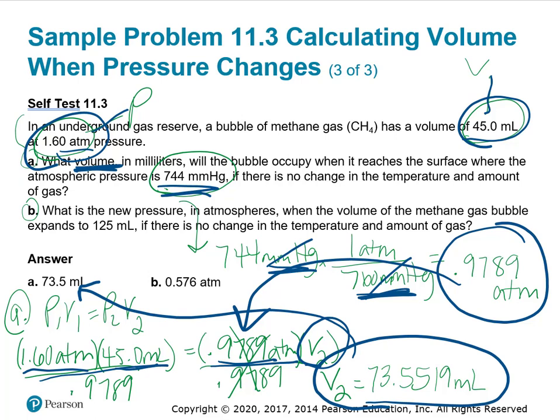We get a volume of 73.5519. We want three significant figures, so 73.6 milliliters. Let's make sure this makes sense. My pressure went from 1.6 to about 1, so pressure went down. The volume should go up, from 45 milliliters up to 73.6 milliliters. Sounds about right.